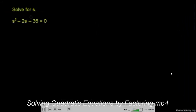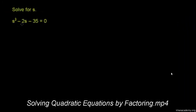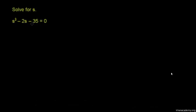We're asked to solve for s, and we have s squared minus 2s minus 35 is equal to 0. If this is the first time you've seen this type of quadratic equation, you might be tempted to solve for s using traditional algebraic means, but the best way to solve this — especially when it's explicitly equal to 0 — is to factor the left-hand side and think about the fact that those binomials you factor into have to be equal to 0. So let's just do that.